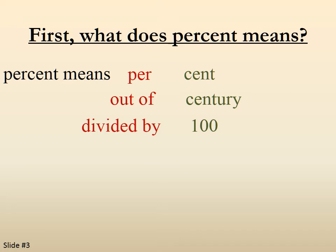So percent means divided by 100, or we can think of it as multiplied by 1 over 100. When we translate the percent part, we're going to be using multiplied by 1 over 100.